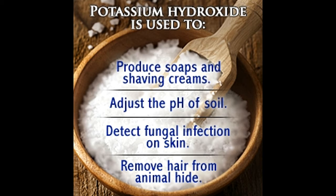Did you know? Being highly reactive, pure potassium is not found free in nature. It is present in ionic salts and in some minerals. It can be obtained in its pure form through the electrolysis of its hydroxide or its chloride. It was first isolated through electrolysis by Sir Humphrey Davy in 1807. It was the first elemental metal to be found through electrolysis.